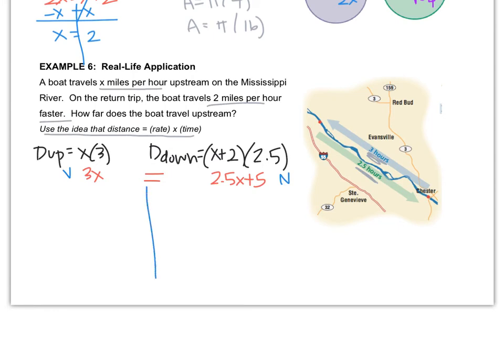I get 0.5x equals 5, and then I have to divide both sides by 0.5. You get that x is equal to 10.